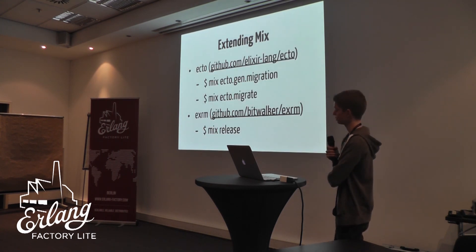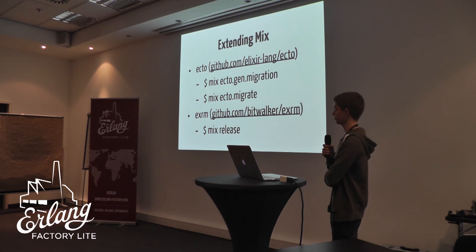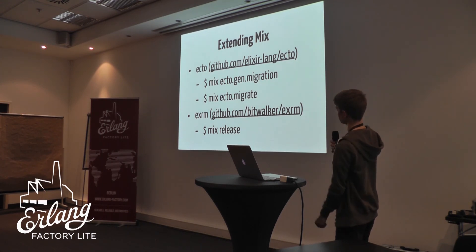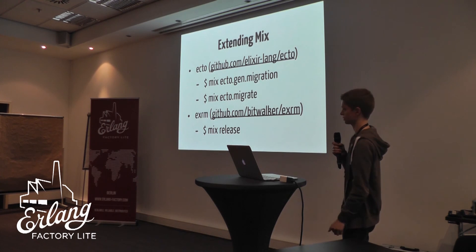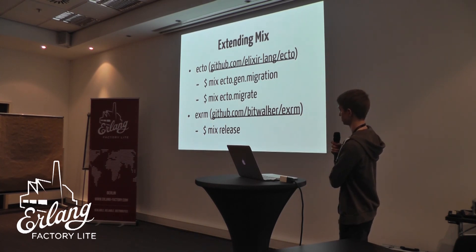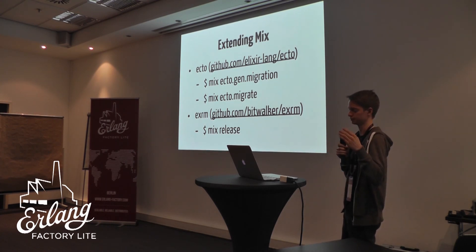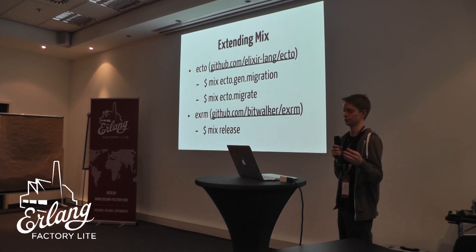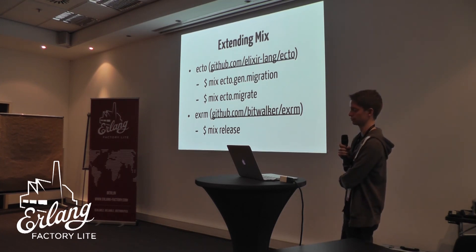Ecto and ExRM are two great examples of this. Ecto is a database library that supports database migrations, so we have a task 'ecto.migration' that generates all the boilerplate for a migration file. Then we have the 'ecto.migrate' task that will run the migrations against the database. ExRM is a release management tool. It uses RelX for compiling the release, and it can fetch configuration from your Mix file and fetch OTP configuration for your application from the Mix configs.